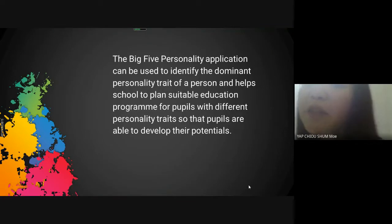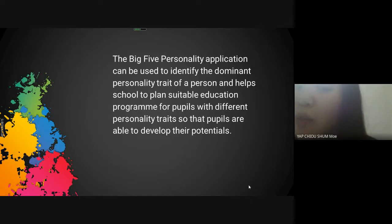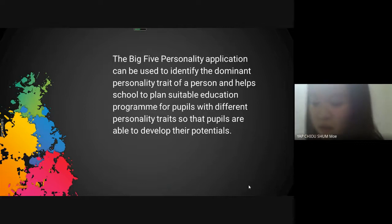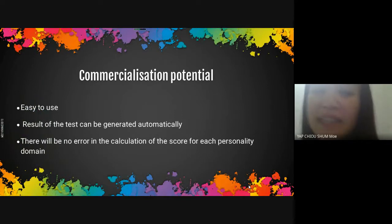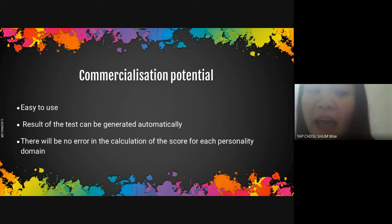The Big 5 personality application can be used to identify the dominant personality traits of a person, and help schools to plan suitable education programs for pupils with different personality traits, so that pupils are able to develop their potentials. This app has commercialization potential, as it is easy to use, results of the test can be generated automatically, and there will be no error in the calculation of the score for each personality domain.